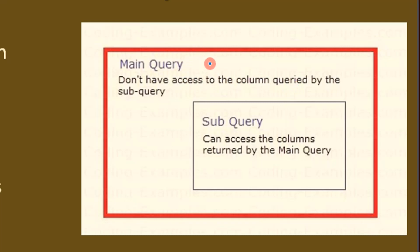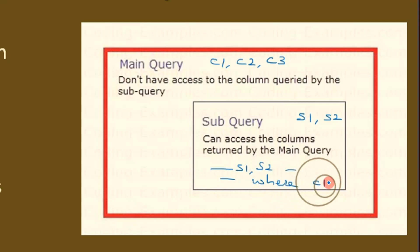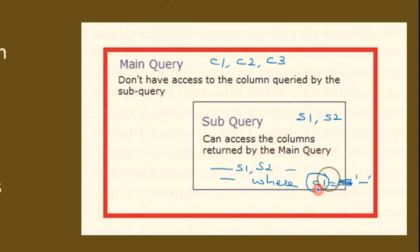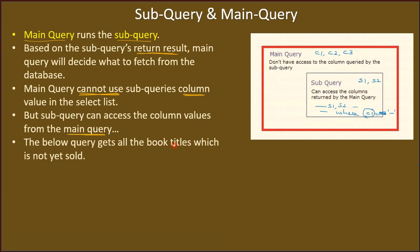Let's say the main query is querying three columns C1, C2, and C3, and the subquery is querying two columns S1 and S2. The main query cannot access S1 and S2, but the subquery can access C1, C2, and C3. For example, the subquery may select S1 and S2 in its select list and use a WHERE condition referencing C1 or a constant. The key point is the subquery can access the main query's columns C1, C2, and C3.